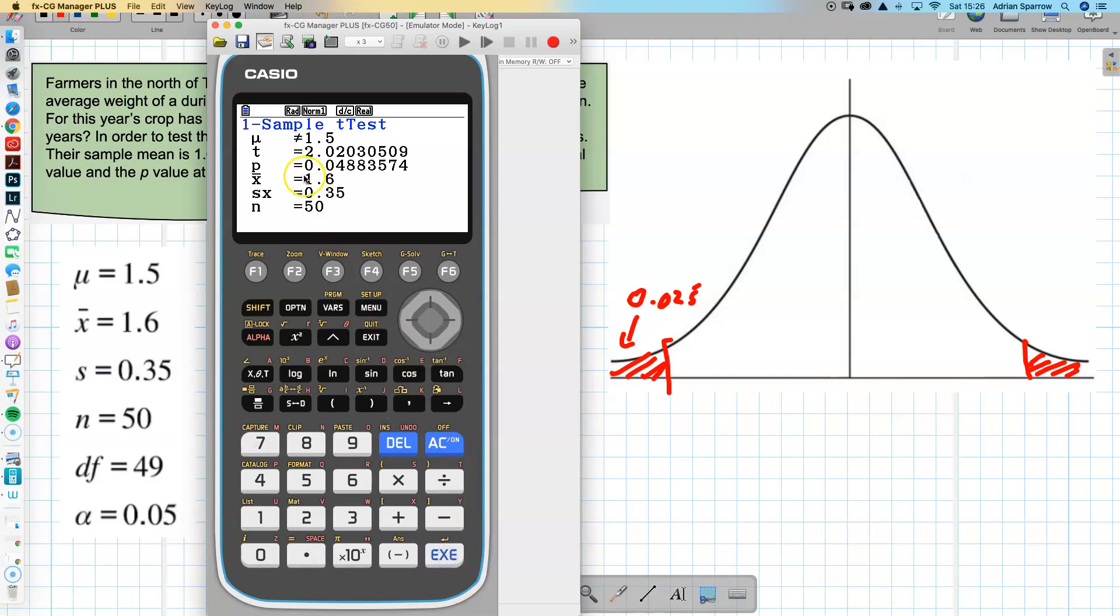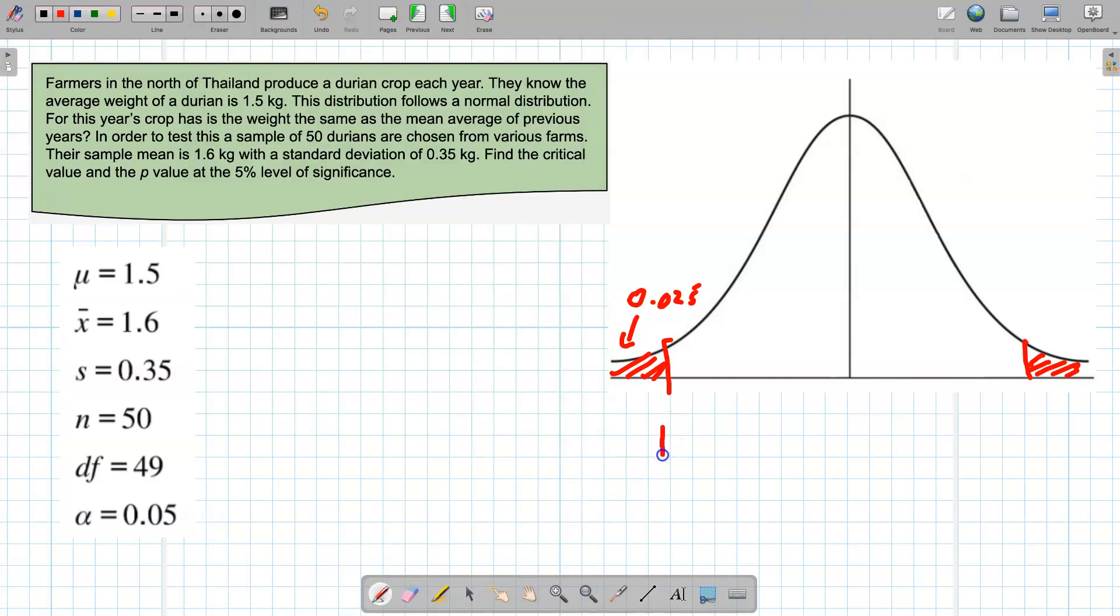Execute and we have p is 0.048, so we'll write that down 0.048 and then we can use it later when we do some testing.